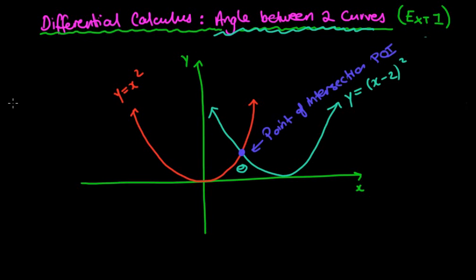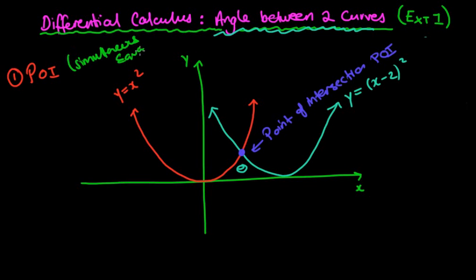It might sound pretty tough but it is actually quite straightforward. First of all, because it's the angle underneath that point of intersection, we need to find the point of intersection. Hopefully you remember that to find the point of intersection of two lines or two curves, we use simultaneous equations. So the first step is to find the point of intersection as an x and y coordinate using simultaneous equations.